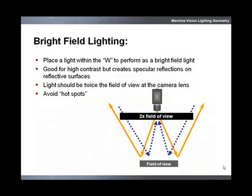The position of a light source will determine what type of lighting will result. Bright field illumination creates high contrast, but typically must be diffused and uniform to avoid specular hotspots from light reflecting back directly into the camera.